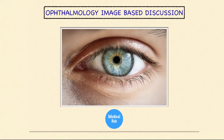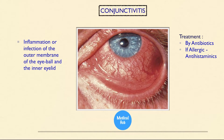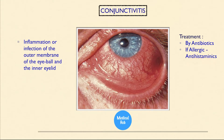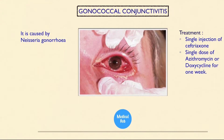Hello friends, today our topic is the ophthalmology image-based discussion. We will start with conjunctivitis — inflammation or infection of the outer membrane of the eyeball and the inner eyelid. Treatment is by antibiotics, and if allergic, antihistaminics. The types of conjunctivitis include gonococcal conjunctivitis, which is caused by Neisseria gonorrhoeae.